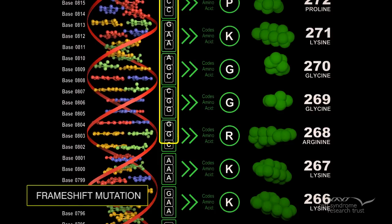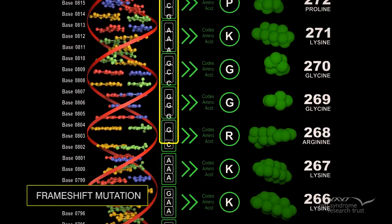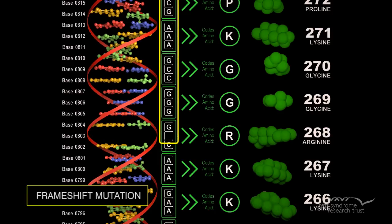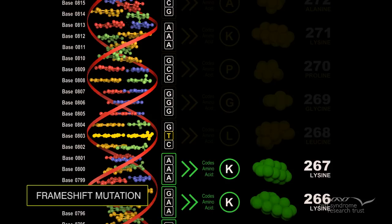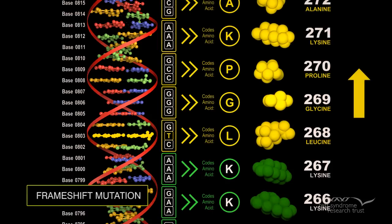Frameshift mutation: This type of mutation occurs when the addition or loss of DNA bases changes a gene's reading frame. A reading frame consists of groups of three bases that each encode for one amino acid. A frameshift mutation shifts the grouping of these bases and changes the code for amino acids.